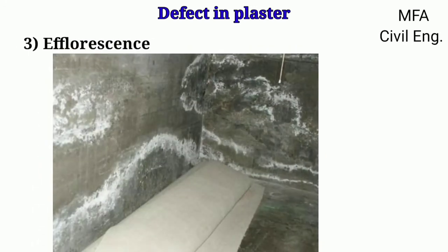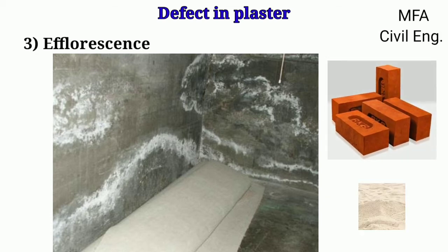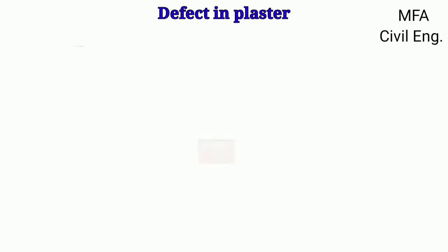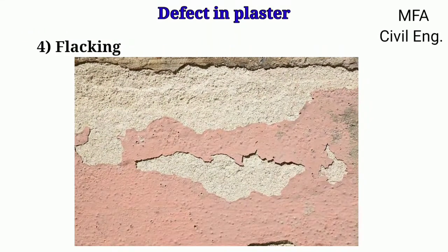Efflorescence is a whitish crystalline substance which appears on the surface due to the presence of salts in the plaster making material as well as building materials like bricks and sand, and even in the water. This gives a very bad appearance.